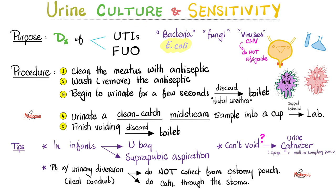If for some reason we cannot get it fresh, then put it in the refrigerator — unless you're trying to culture CMV in the urine, because refrigeration for CMV will ruin the sample. After collecting the midstream in the cup, you can tell the patient to continue urination — just keep voiding and finish.